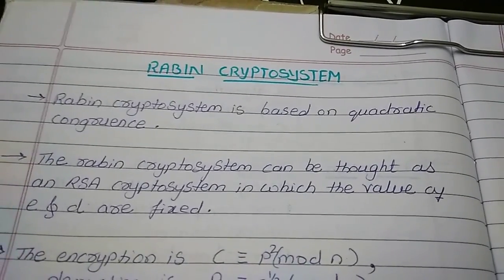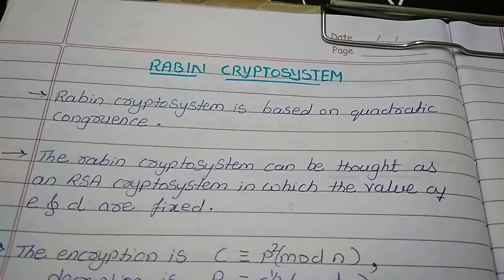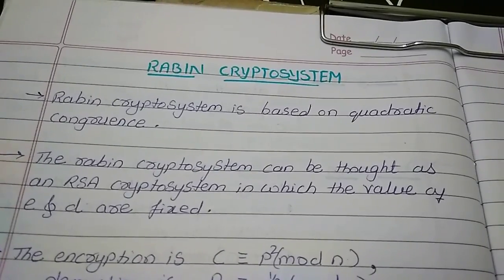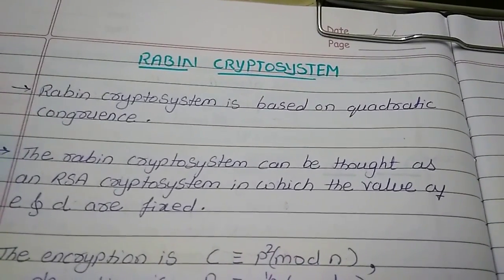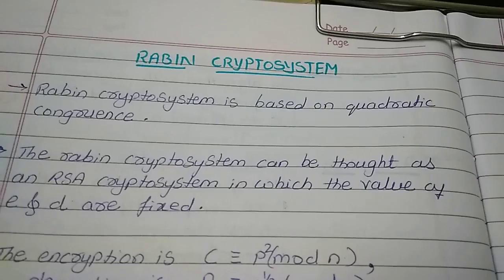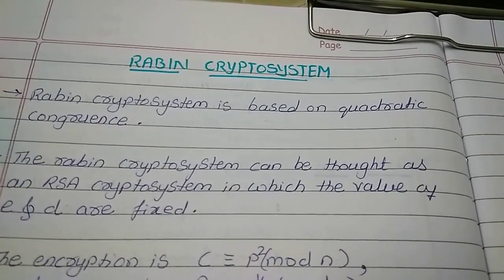Hello everyone, now we will see the concept of Rabin cryptosystem which is based on quadratic congruence. The Rabin cryptosystem can be same as that of RSA cryptosystem what we have seen in the previous video.